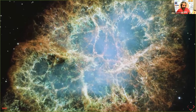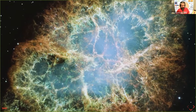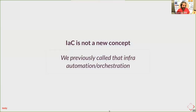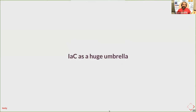Preparing this talk, I realized there are some similarities between supernovas and the status of infrastructure as code. In the picture you can see the Crab Nebula, originated by a supernova something like 7,000 years ago. I'm not an astronomy expert, but the similarities are very evident. One is that infrastructure as code is not a new thing — you have probably already been doing it before we had that term, when provisioning virtual devices or pushing configurations against your vendor's API.